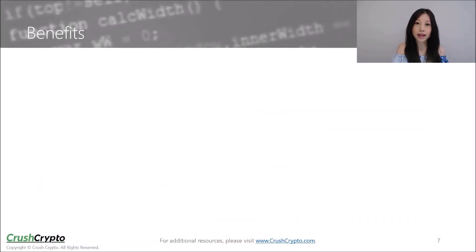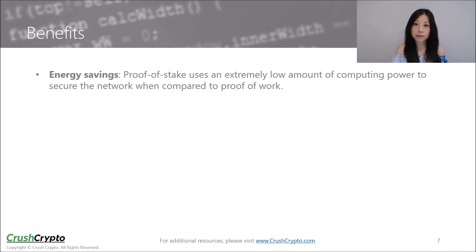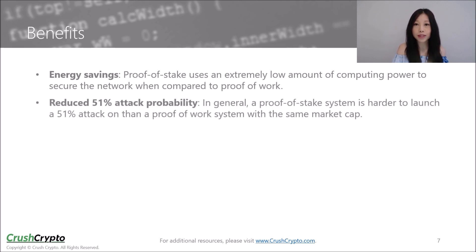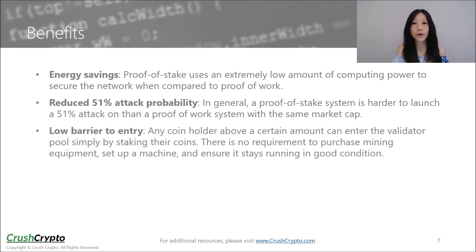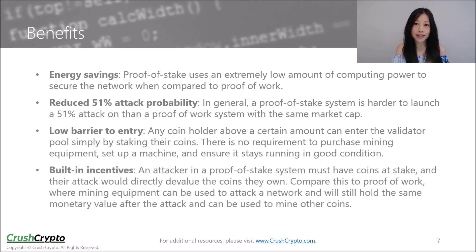So what are some of the benefits of using Proof of Stake? First of all, it uses an extremely low amount of computing power to secure the network when compared to Proof of Work, resulting in greater energy savings. There is a lower chance of a 51% attack — in general, a Proof of Stake system is harder to attack than a Proof of Work system with the same market cap. There is also a lower barrier to entry, as any coin holder above a certain amount can enter the validator pool simply by staking their coins, with no requirement to purchase mining equipment or maintain machines. And lastly, Proof of Stake has built-in incentives: an attacker must have coins at stake and their attack would directly devalue the coins that they own, whereas mining equipment can still hold monetary value and be used to mine other coins after an attack.